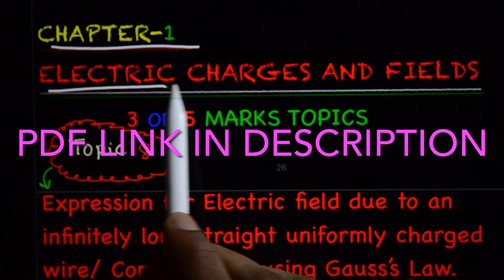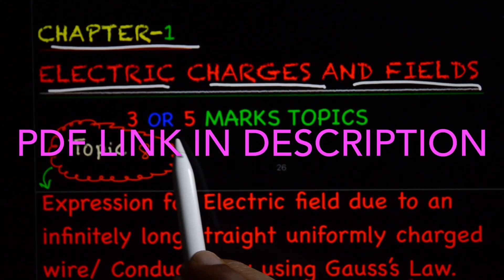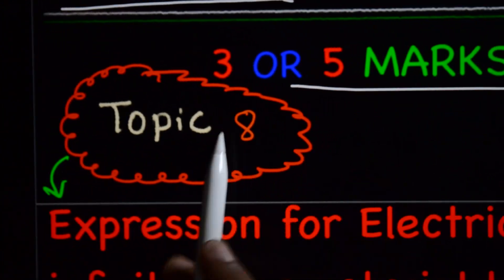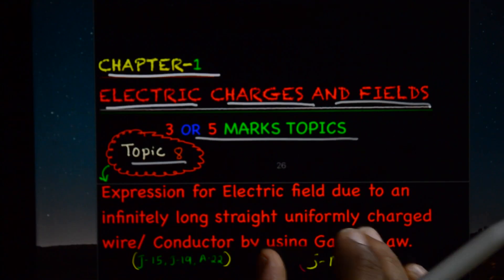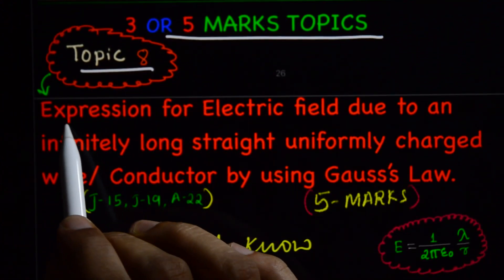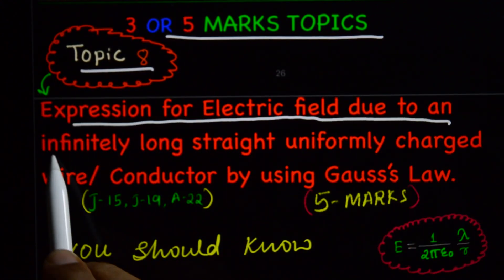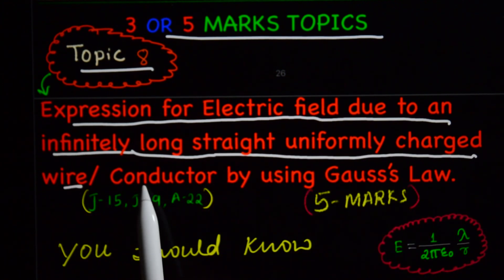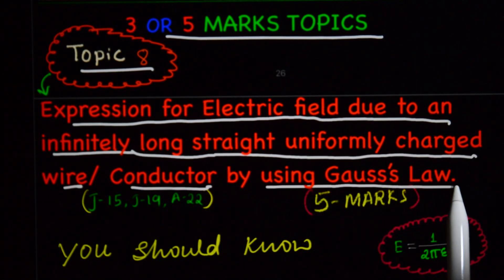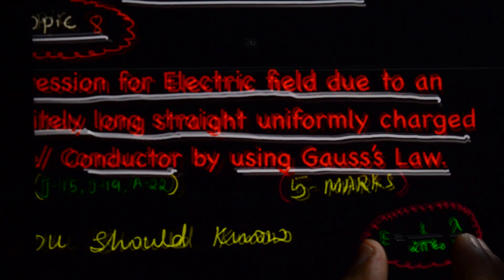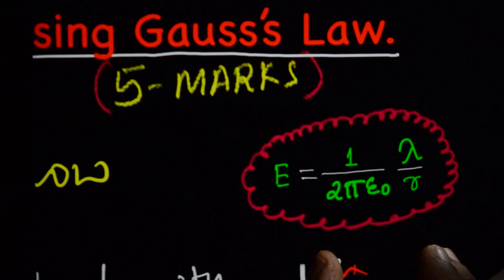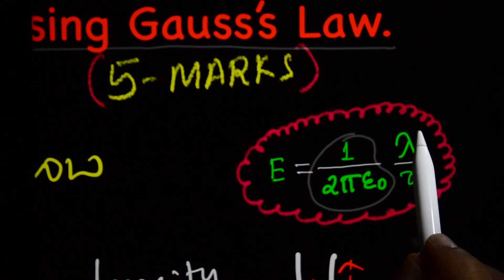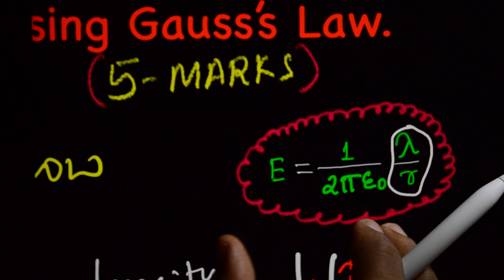Chapter 1: Electric Charges and Fields. This is a 3 and 5 mark topics discussion — topic number 8: Expression for electric field due to an infinitely long straight uniformly charged wire or conductor using Gauss's Law. The expression we need to derive is E = 1/(2πε₀) × λ/r.